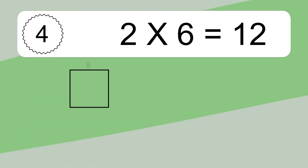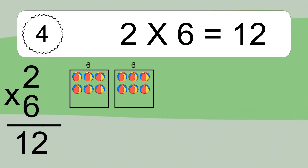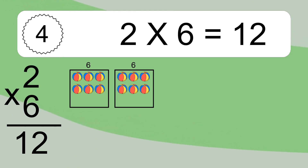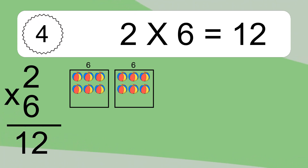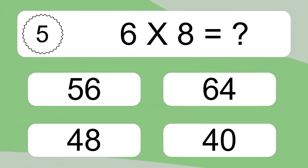2 times 6 equals 12. We have 2 boxes, and each box has 6 colorful balls inside. If you count all the balls in all the boxes together, you will have 2 times 6 balls. This equals 12 balls.